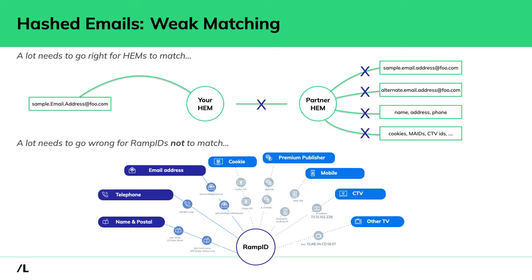Almost everything has to go wrong for digital signals in one partner not to be associated with a RampID. And if that RampID is shared — meaning the same person is identified — the match is deterministic; it's a foregone conclusion. There's no syntactic risk about data formats. We are agnostic to data formats and agnostic to the hope of a single shared piece of PII data. That's why we say hashed emails give weak matching.